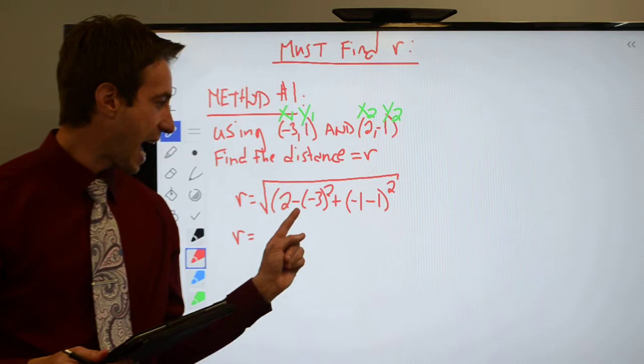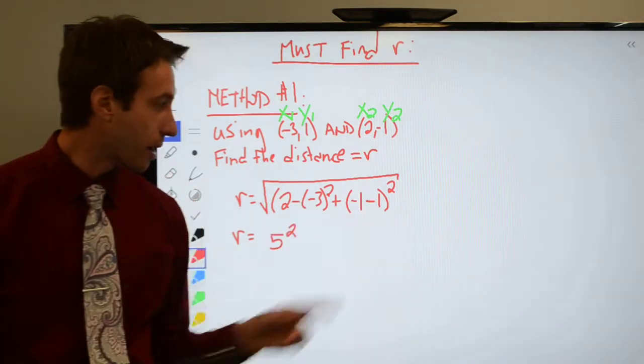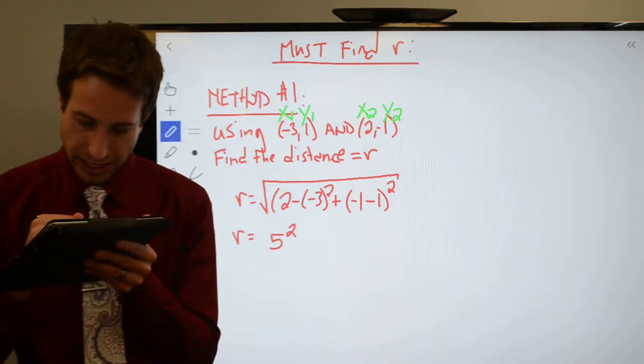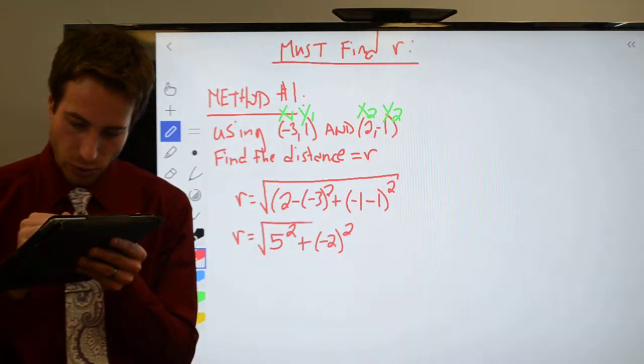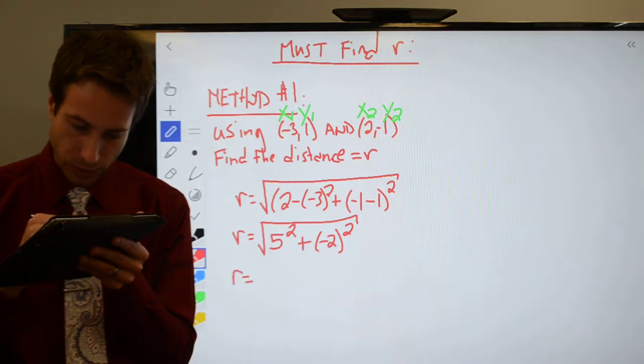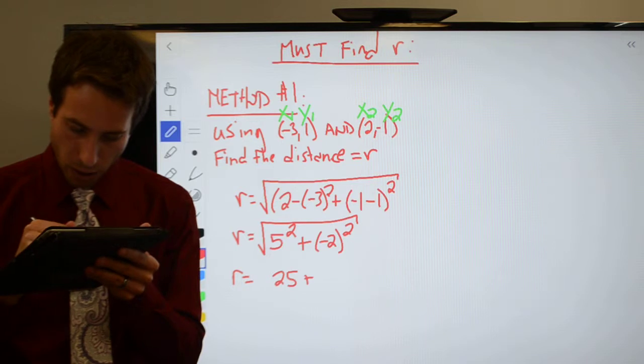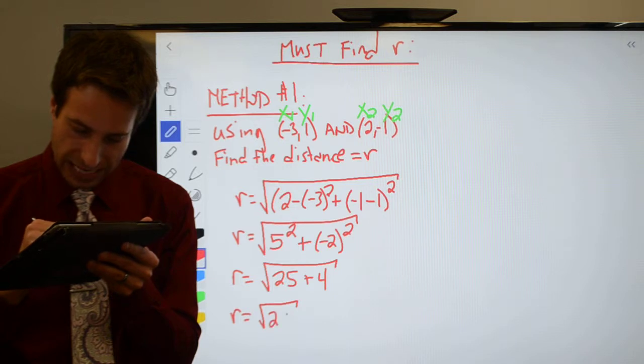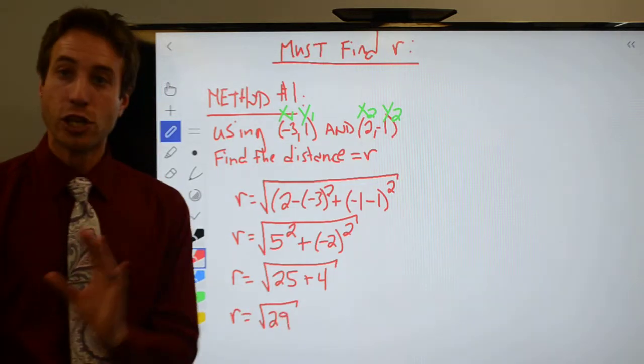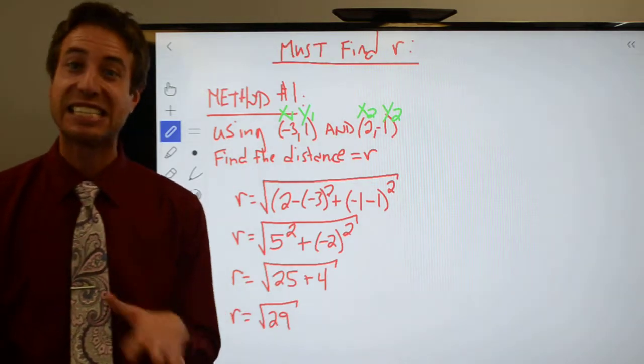Alright, so here we go. I'm going to add the opposite, so that's going to give me a 5 squared. I'm going to add the opposite, which is going to give me a negative 2 squared. Got to take the square root of that. So r is equal to 25, plus 2 squared is going to be 4. Square root r is equal to the square root of 29, which of course, square root of 29 is not a perfect square. But guys, it doesn't matter.